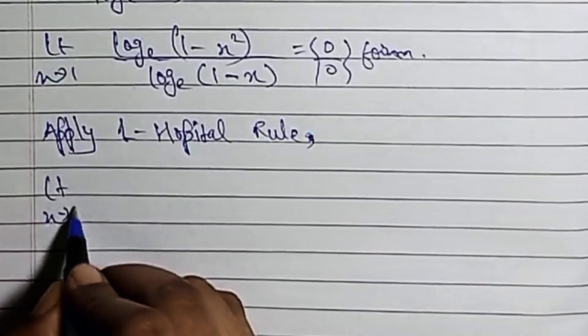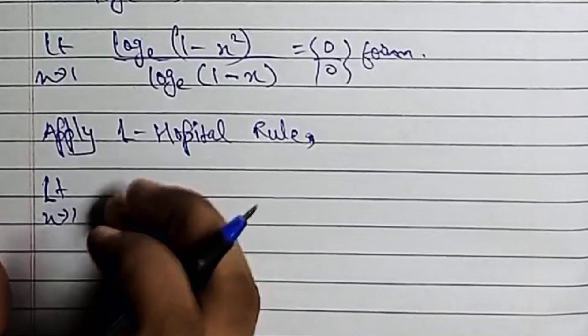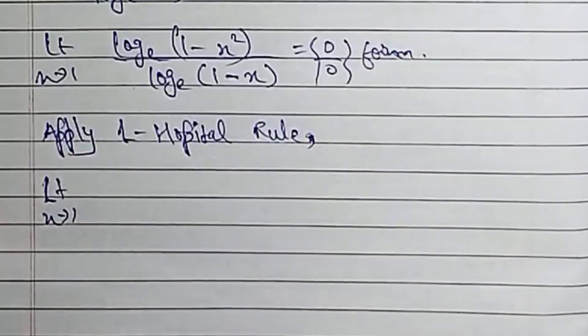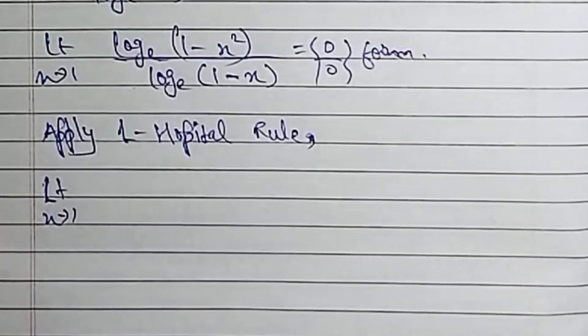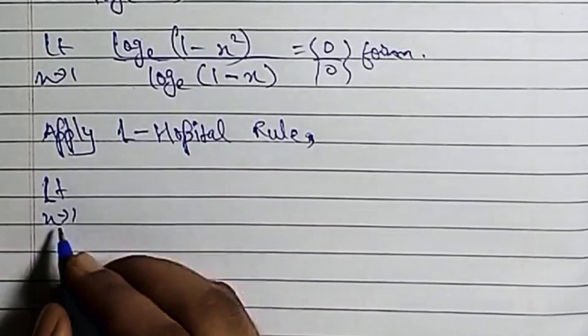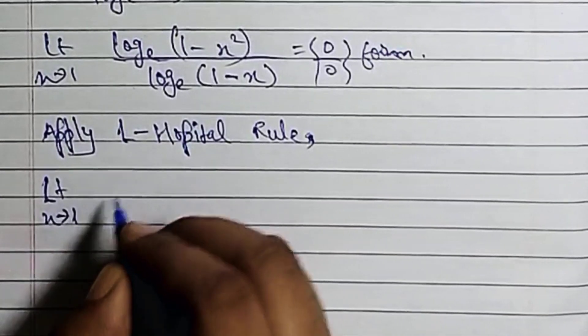So, limit extends to 1. So all copy books and note books are made in this way. Okay, so next to 1.